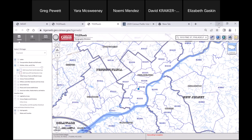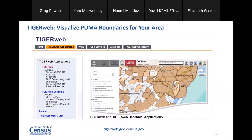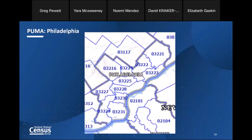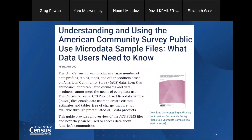Let me go back to my presentation. That's the link for TigerWeb, and it should show up in the chat if you want to check out this tool. Here's a screenshot of what I just showed you — the PUMAs for Philadelphia. The Census Bureau also has guidebooks that give you everything you ever wanted to know about our data and geography. If you want more information on PUMAs and how to use them with ACS, check out this guidebook — it's fantastic.